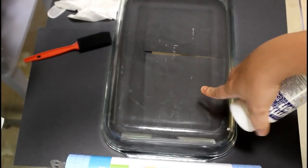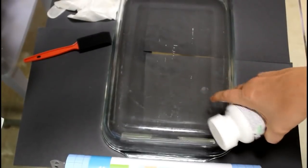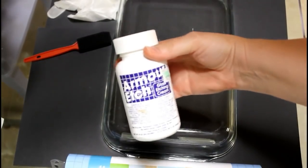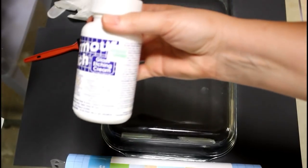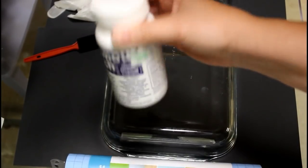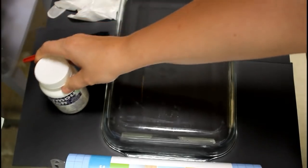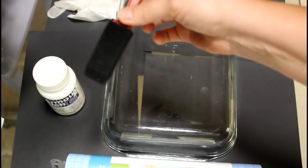So we're going to use Pyrex and you can use any type of glass. I'm going to use Armor Etch and I get mine from Hobby Lobby and I use a 40% off coupon so it's around $12 and then you're going to need a brush.